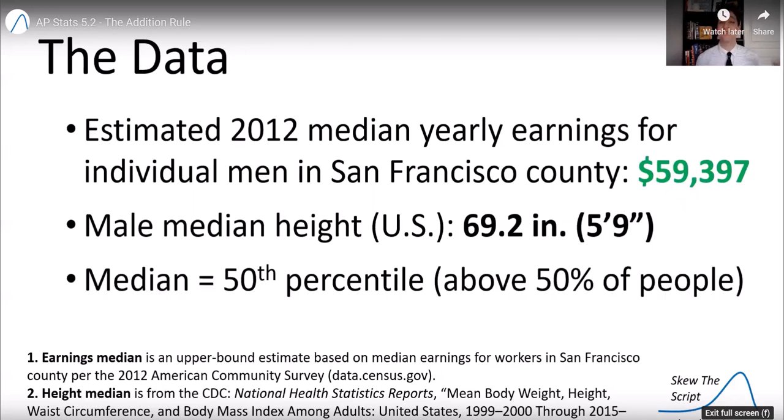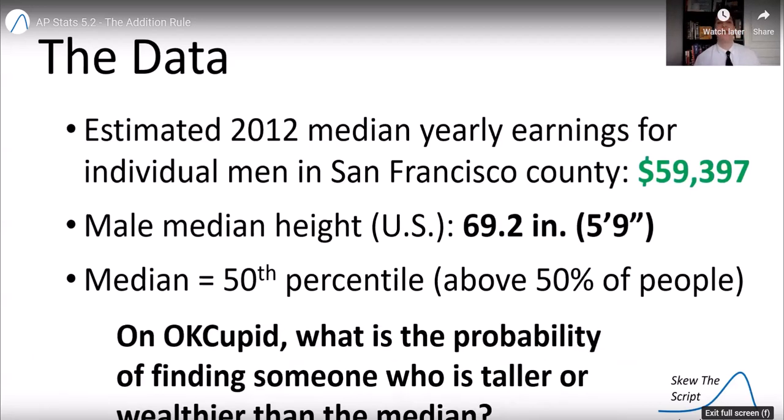Remember what the median is. The median is the 50th percentile of the data set. So in the United States, we'd see 50% of people would be above that height, 50% of people below that height. And in San Francisco County in 2012, 50% of men would earn more than that amount or less than that amount. So on OKCupid, not in the general population, but on OKCupid specifically, what is the probability of finding someone who is taller or wealthier than the median?